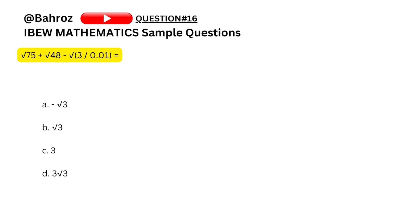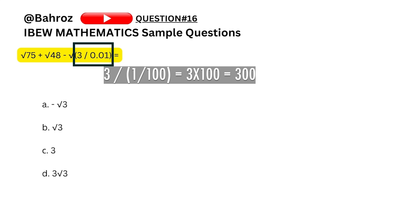Question sixteen: square root of 75 plus square root of 48 minus square root of (3 divided by 0.01). First, 0.01 is 1 divided by 100, so 3 divided by (1/100) becomes 300. We are solving square root of 75 plus square root of 48 minus square root of 300. The square root of 300 is a large number and it is subtracted, so even combining the square roots of 48 and 75 together, the result will still be smaller than the square root of 300. The answer will have a negative sign, and the only option with a negative sign is A.